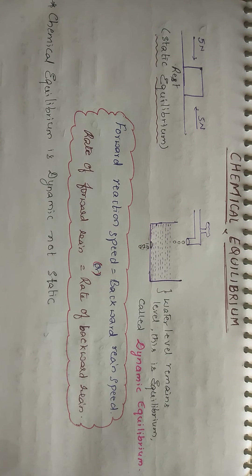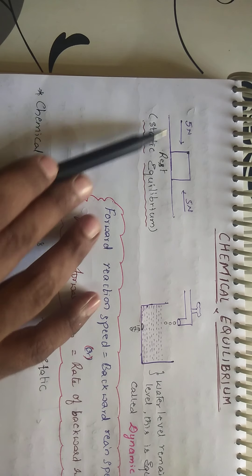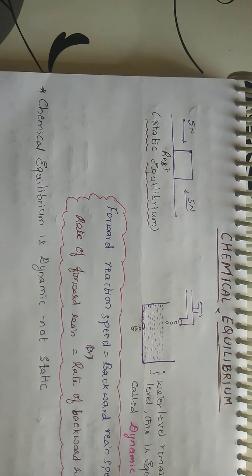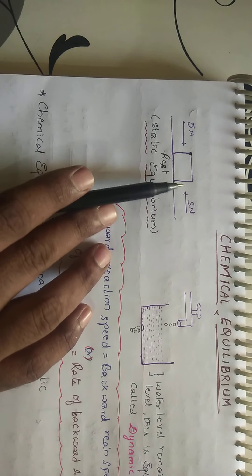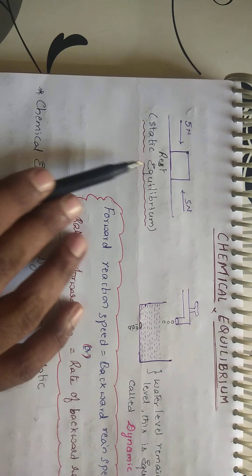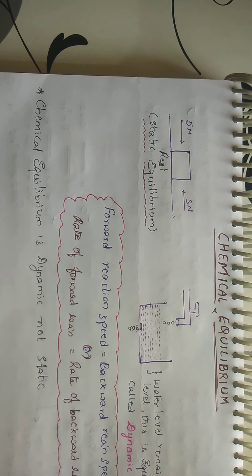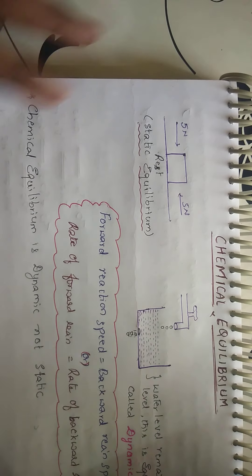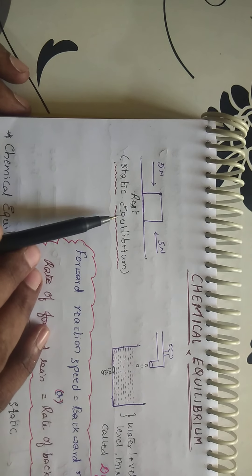Chemical equilibrium is the entire chapter. If you see with respect to physics: a particle is placed on the floor and you are applying 5 Newtons force from this side and 5 Newtons force from the other side. What happens? The body will be in a resting condition. Equal forces are acting in opposite directions. This means equal conditions from both sides — that is called equilibrium. In terms of this particle, this is called static equilibrium.